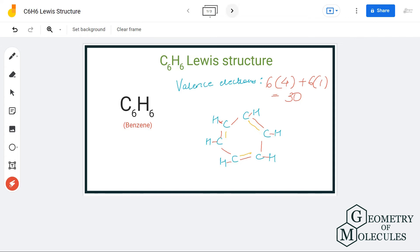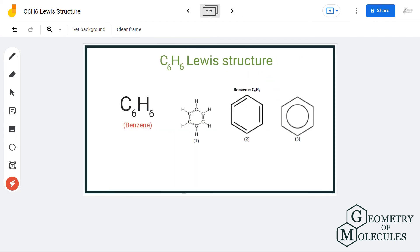And there are many resonance structures for this molecule. Some of them are these: you can also show this molecule by drawing a ring inside this hexagon. This is known as the benzene ring.